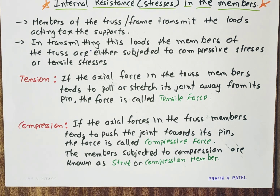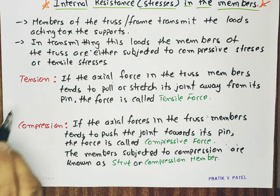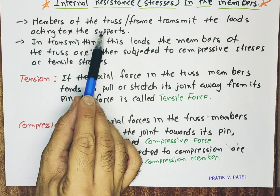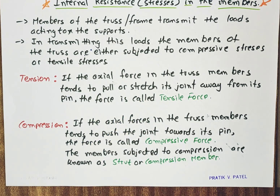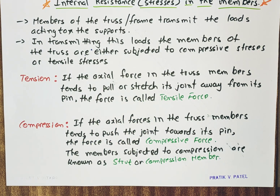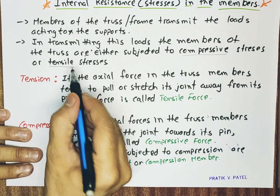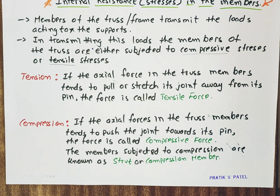We will be talking about what are some of the internal stresses — compressive or tensile — taking place in the members. As discussed earlier, in members of the truss there are only tension and only compression acting. There are no other forces such as shear force, bending moment, etc., because there are no lateral loads. Only longitudinal loads acting on the axis. Members of the truss transmit the load acting on the supports, and in transmitting this load they are either subjected to compressive stresses or tensile stresses. These are the only two options we need to analyze.